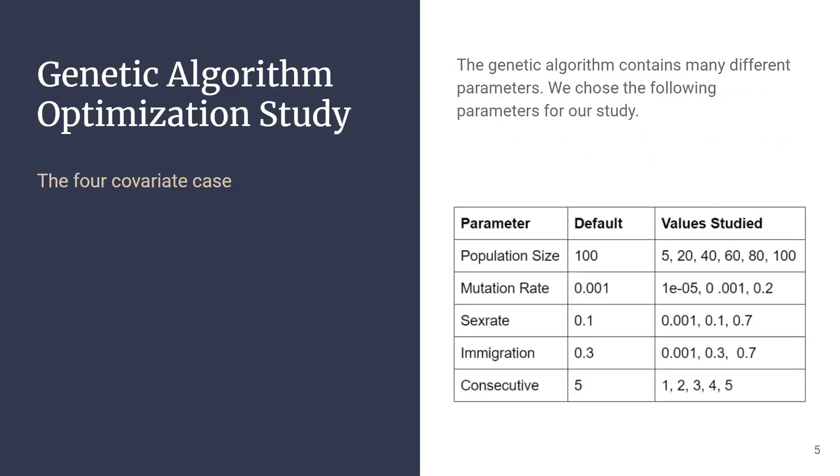We started our study with four covariate models. Here we can see the five different parameter values that we chose. I don't have time to get in-depth on what they individually do, but I can answer questions on that later. You can see the default values in the middle column and the values that we study on the right hand side.